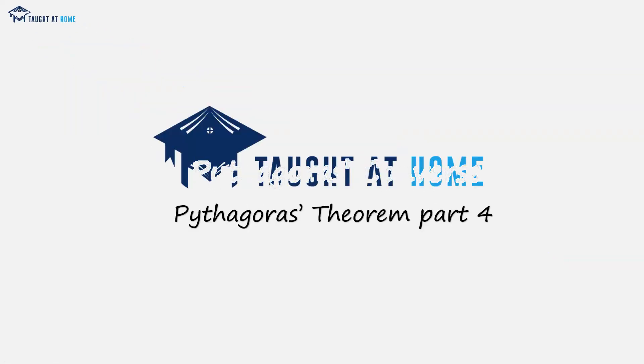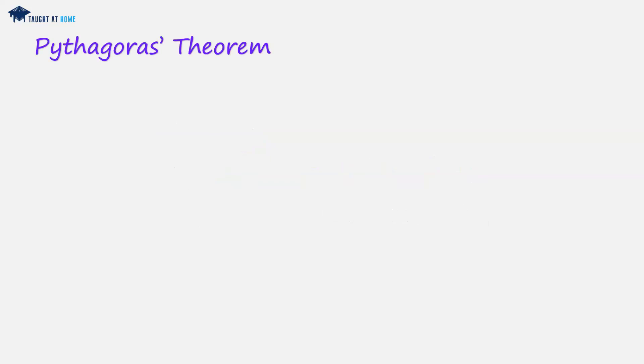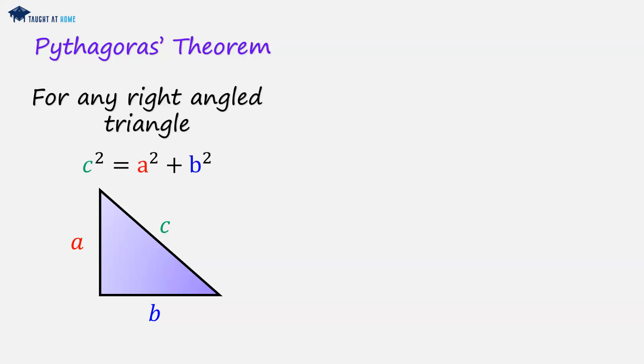Pythagoras' Converse. The Pythagoras' Theorem tells us that for any right angle triangle, c squared is equal to a squared plus b squared.